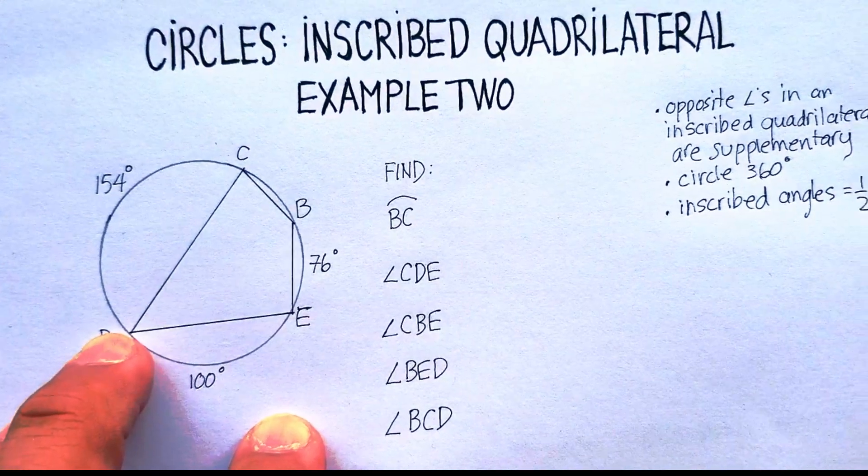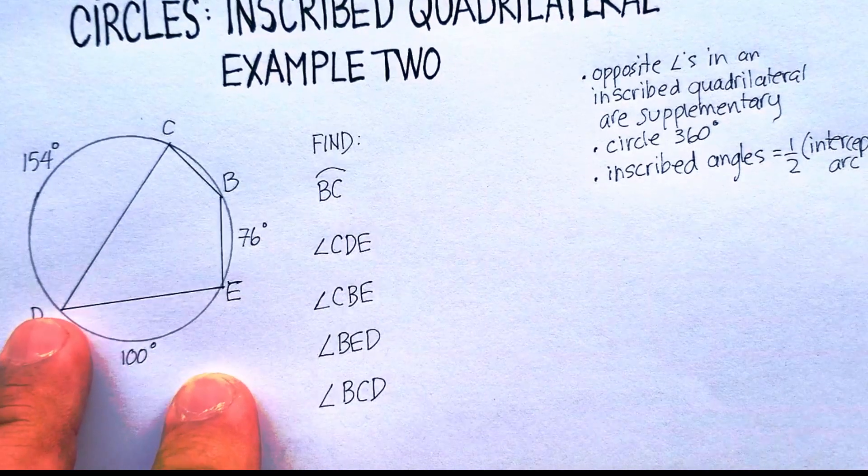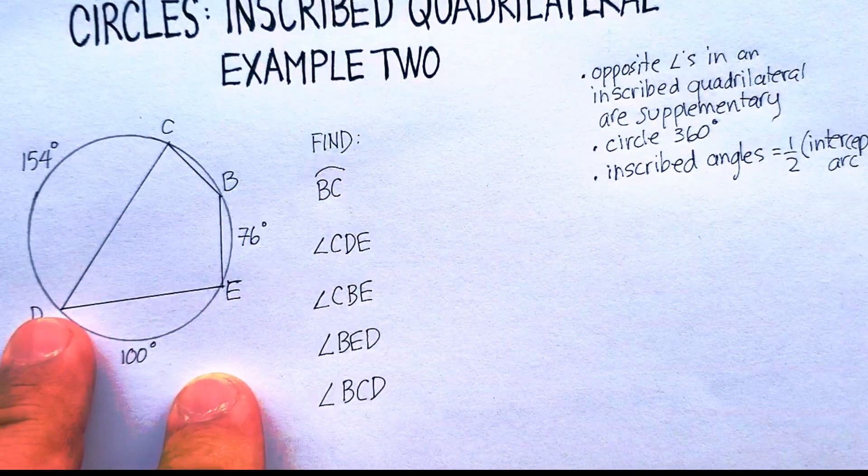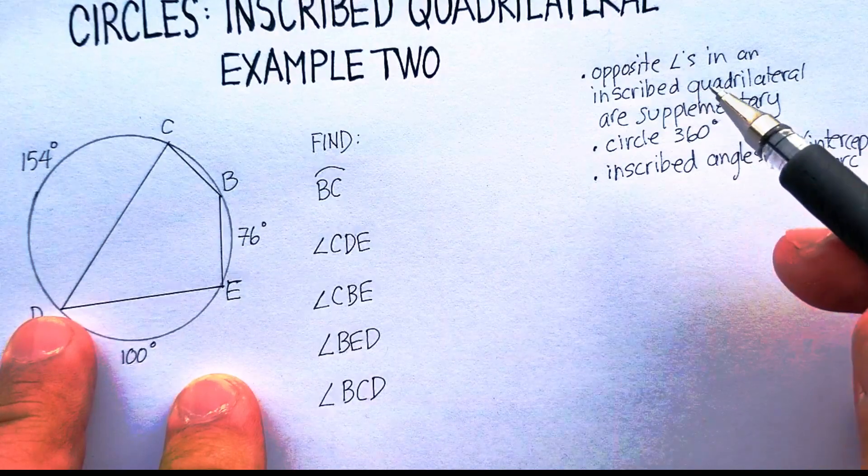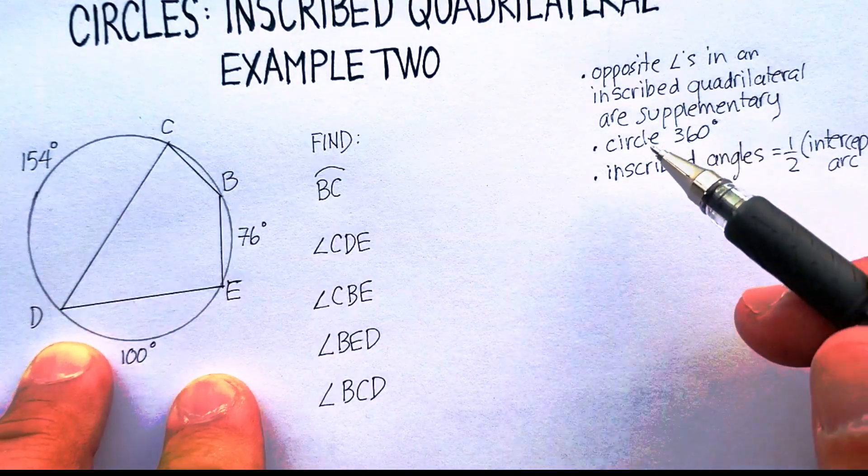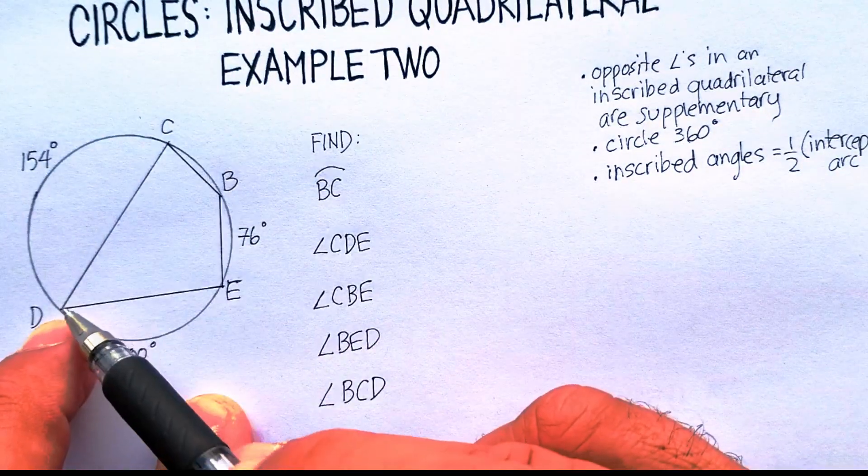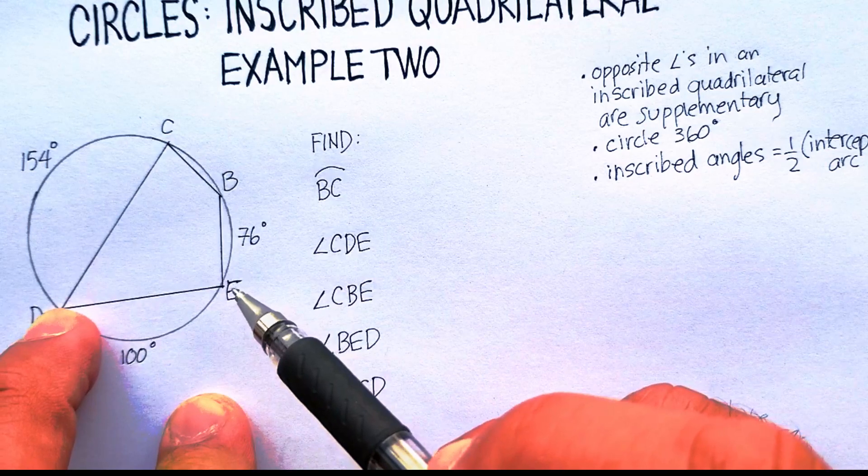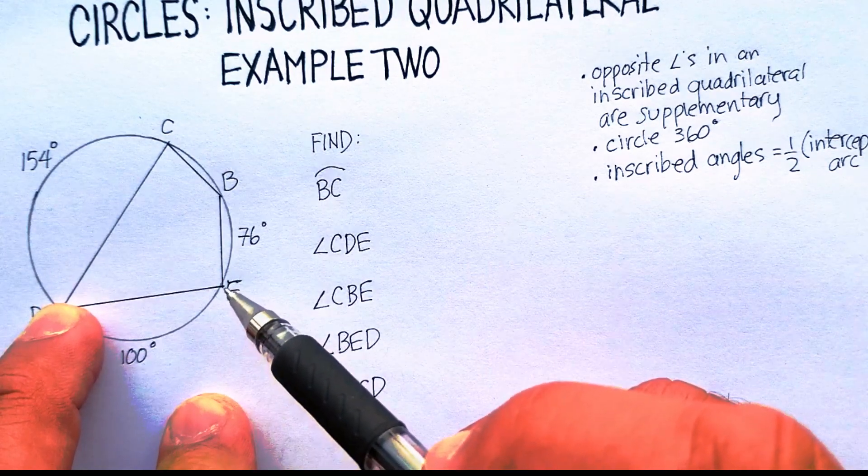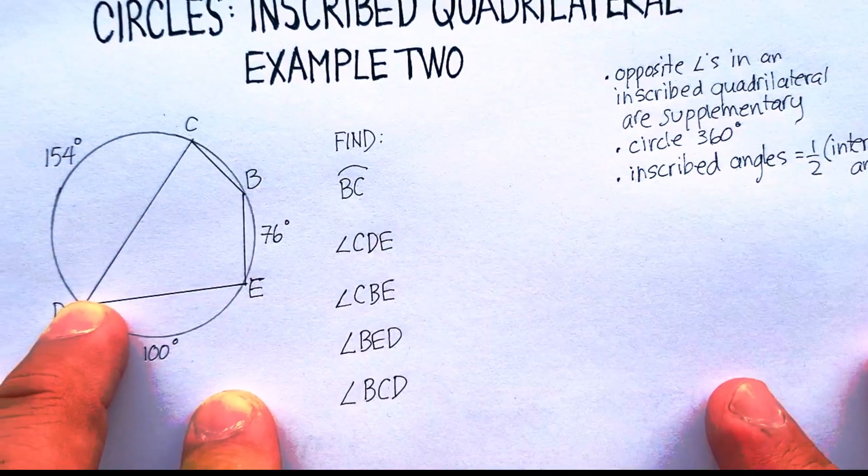Let me just write that down. All right, so again, opposite angles in an inscribed quadrilateral are always supplementary. So that's one thing I'm going to pay attention to. Circle is 360 degrees. And the inscribed angles of the quadrilateral are always equal to one-half the intercepted arc.